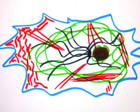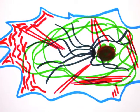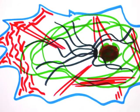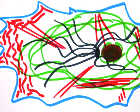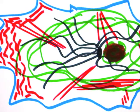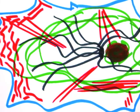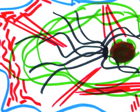The cytoskeleton is a network of protein filaments and accessory proteins that provide eukaryotic cells with structural integrity, motility, and plasticity — in other words, strength, movement, and shape.